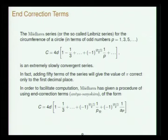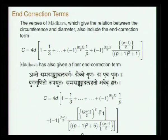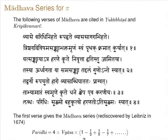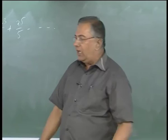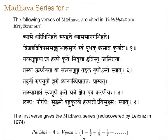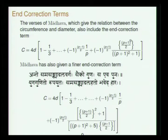Obviously the correction term depends upon the p value. The verses of Madhava where the pi by 4 series is enunciated — that verse itself gives the correction term that Madhava proposed: 'yath sankhyaya atra harane hrite nivritta hritihi tu jamitaya.' By going on successively dividing by the odd numbers, if you get tired — jamitaya nivritta hritihi — then take the following correction after that. The correction term proposed by Madhava is (p+1)/2 divided by (p+1)² + 1.